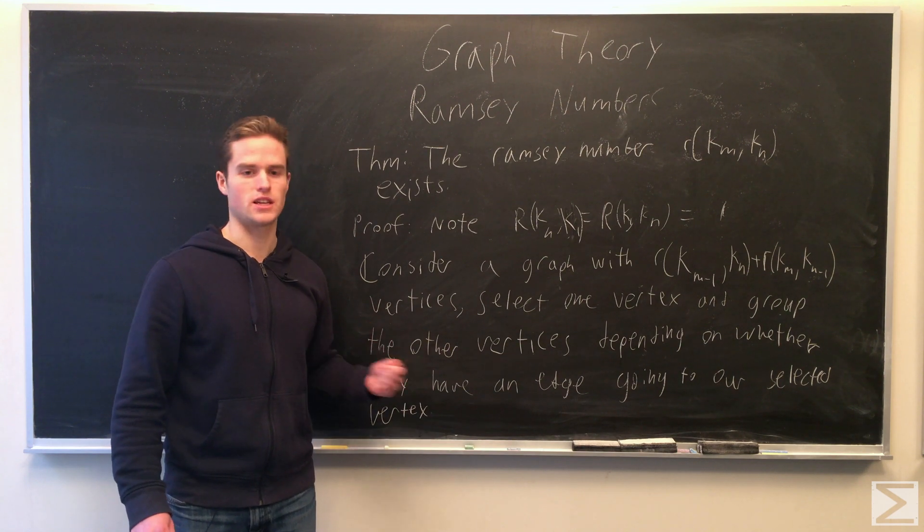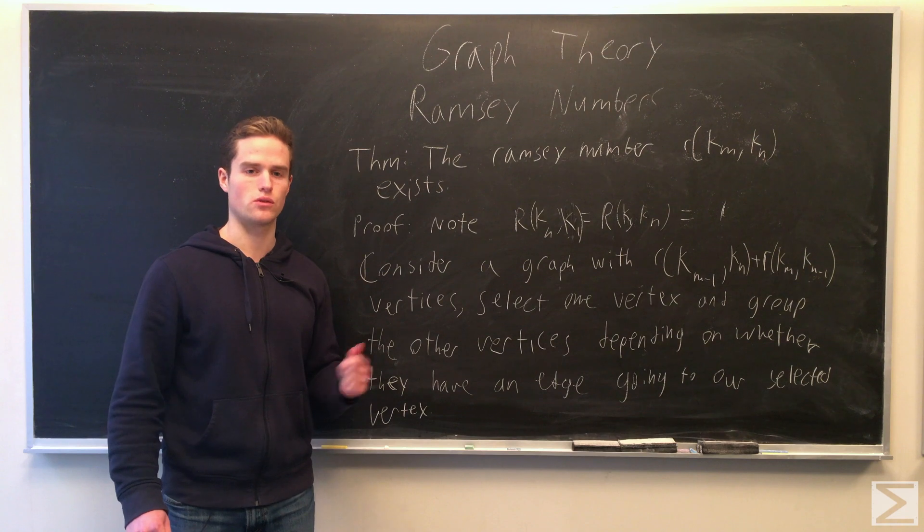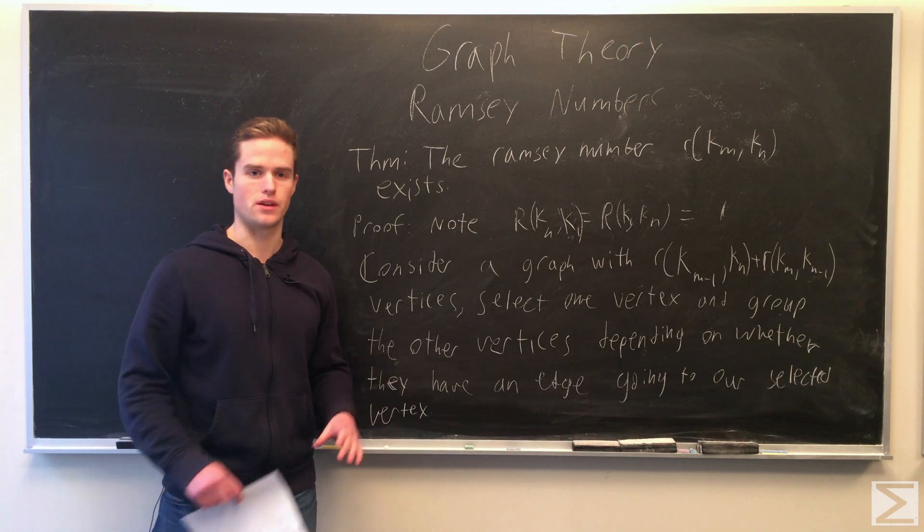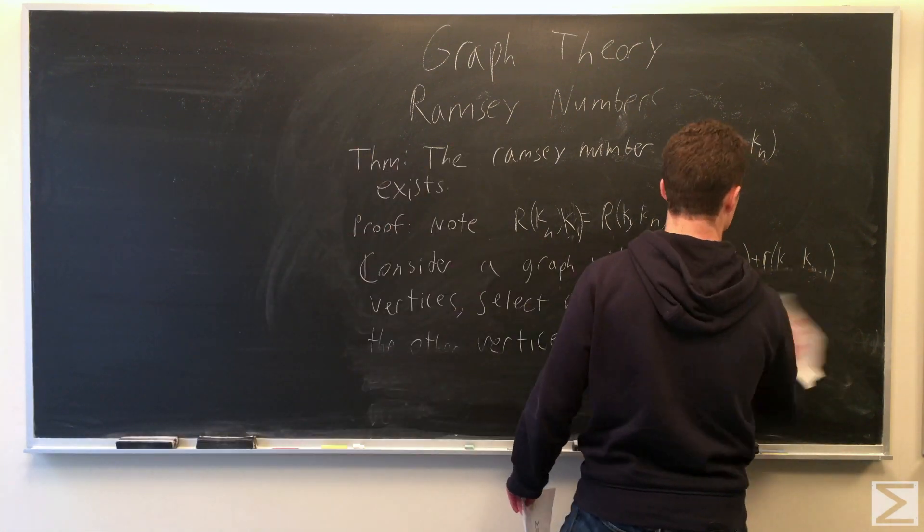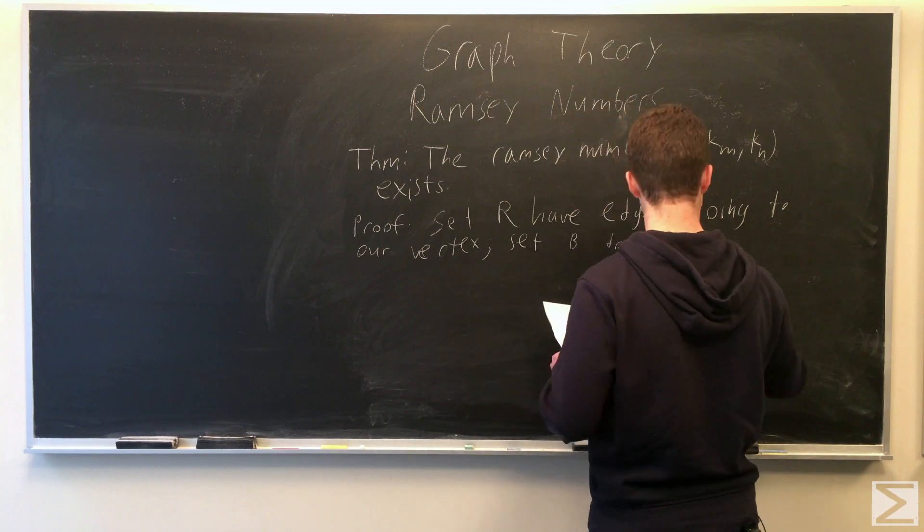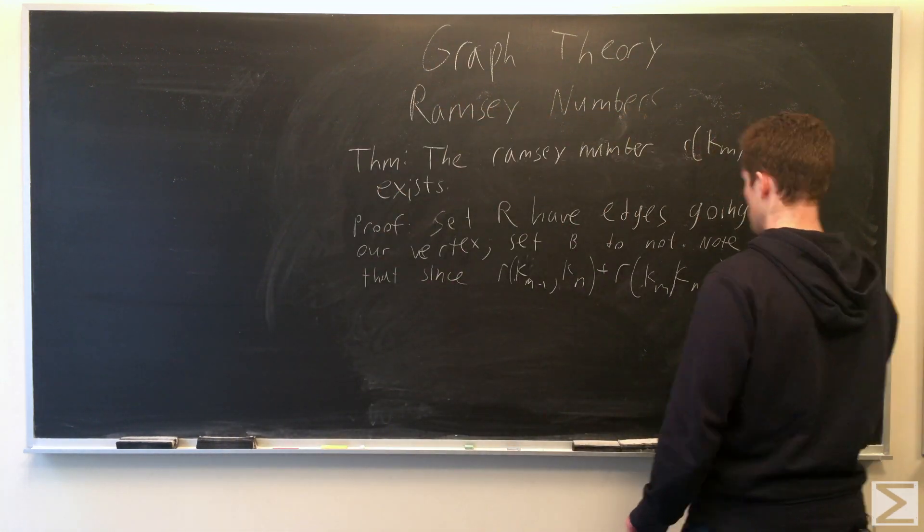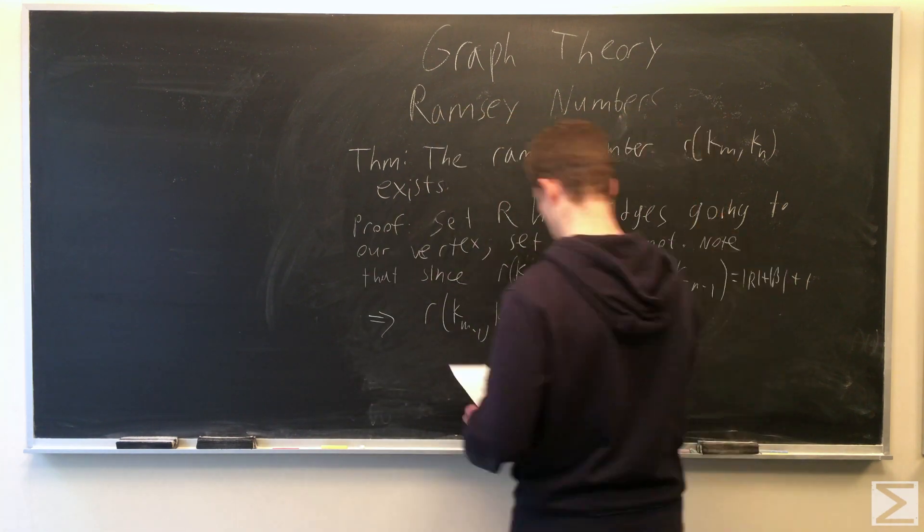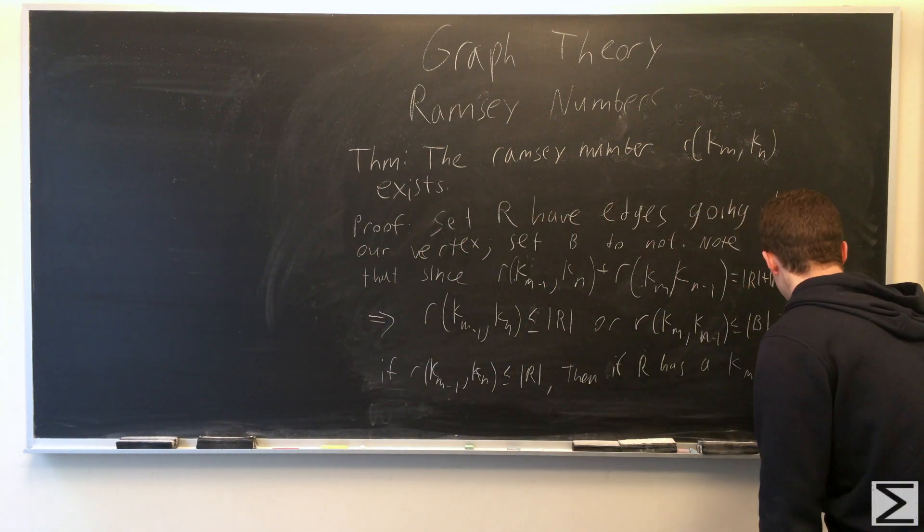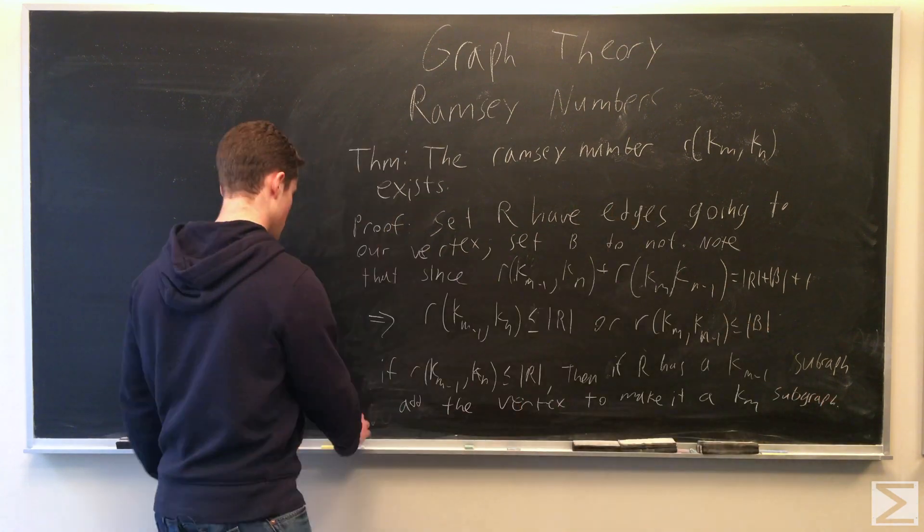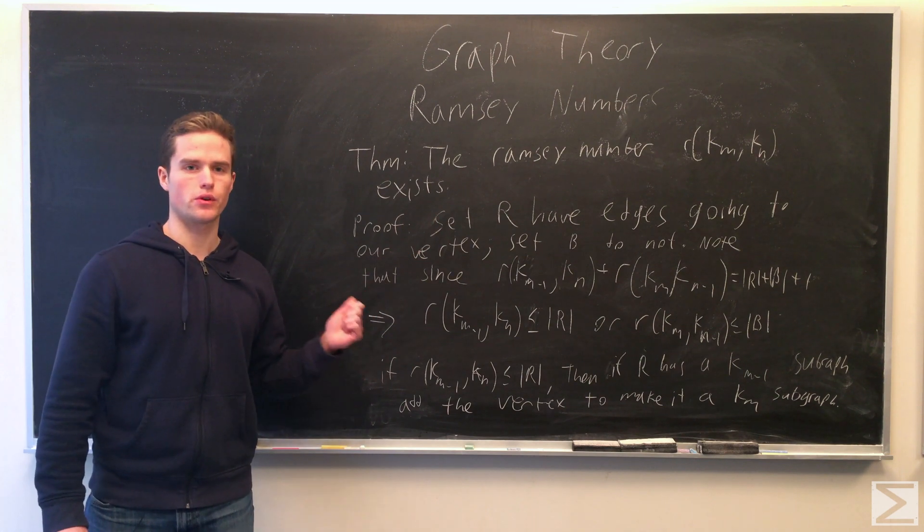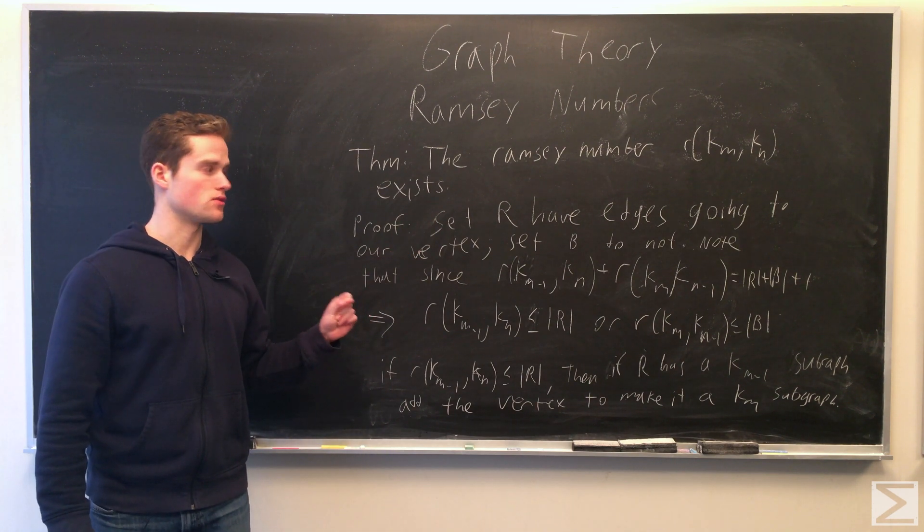So we're going to call the set of vertices that do have an edge going to our vertex the set A, and the set of vertices that do not have an edge going to our vertex the set B. The set A has edges going to the vertex we selected. The set B does not have edges going to that vertex.